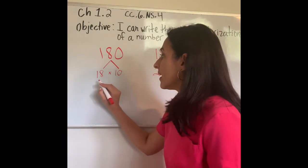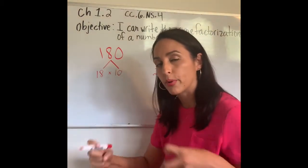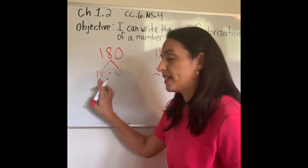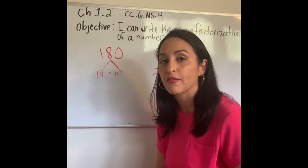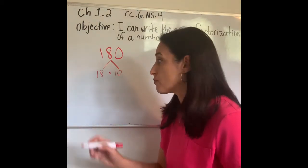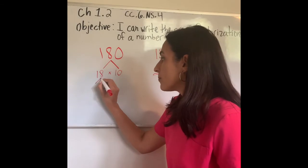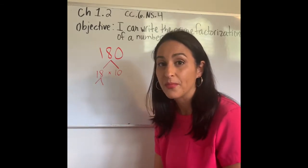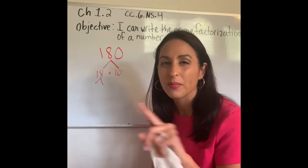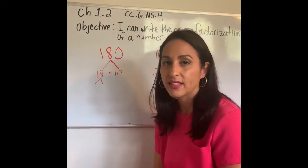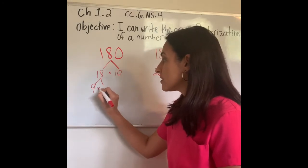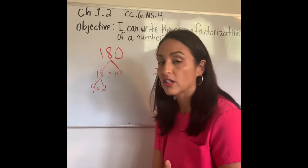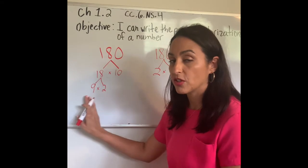Let's go back to the original. 18 times 10 gives me 180, so I'm starting to decompose my number. I always move from left to right when decomposing. Let's focus on 18. I have to break down 18 until I have only prime numbers. What times what gives me 18? I could do 2 times 9, or 3 times 6. Let's do 9 times 2. You could have done 6 times 3 — that's understandable, but follow along with me. Keep always to your right until you get all your prime numbers.